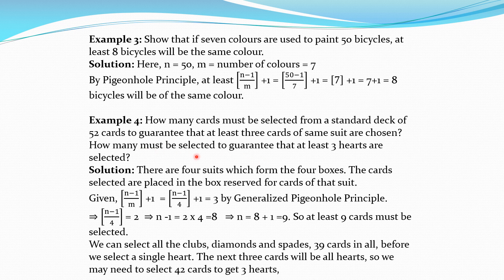How many cards must be selected to guarantee that at least 3 hearts are selected? In this case it is not necessary to use the Pigeon Hole Principle. Other than hearts, there are 13 spade cards, 13 club cards, and 13 diamond cards. It may be possible that first we select all diamond, spade, and club cards — that is 39 cards. After selecting those 39 cards, only heart cards remain. So if we then select 3 heart cards, among 42 cards there will definitely be 3 heart cards. We must select minimum 42 cards to guarantee that at least 3 heart cards will be there.